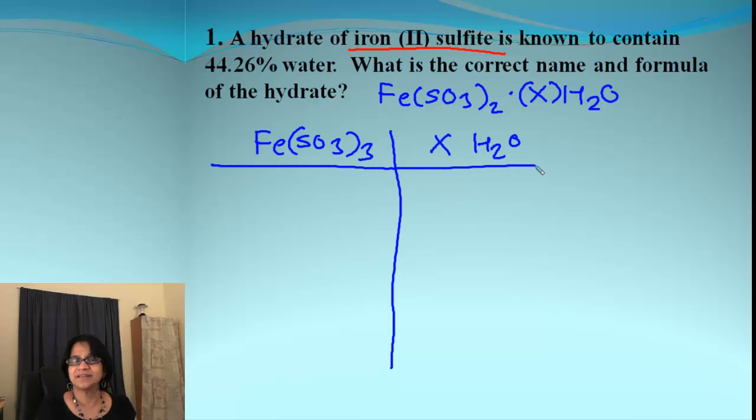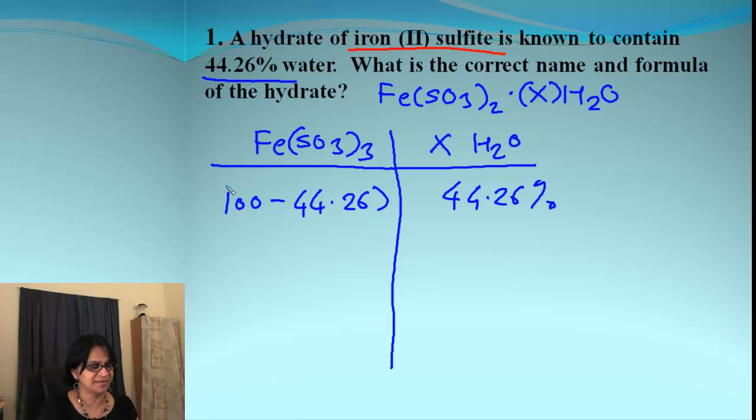And then let's begin with what is given to us. What is given to us is percent of water. So that is 44.26%. Well if water percent is given to you, you can find out the percent for iron 2 sulfite. That will be simply subtraction from 100. And when we do that, what we get is 55.75.